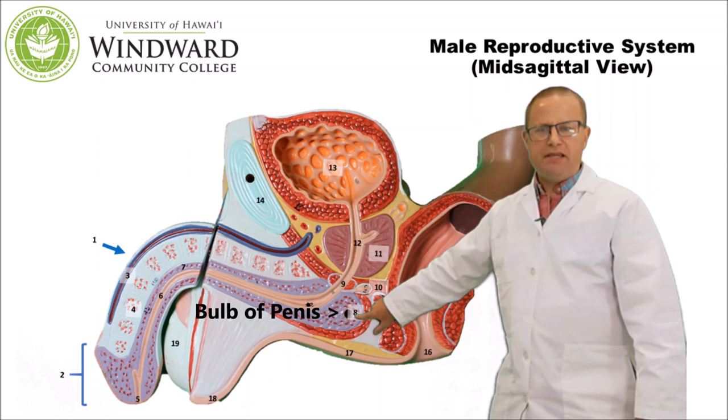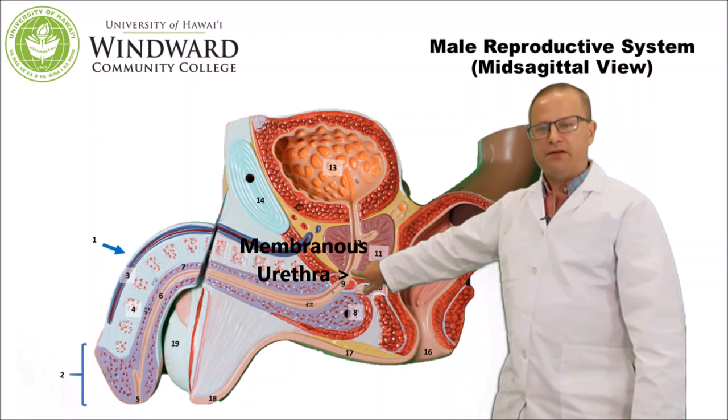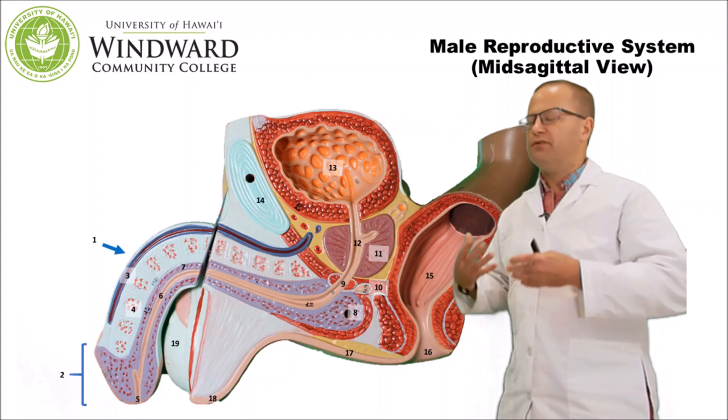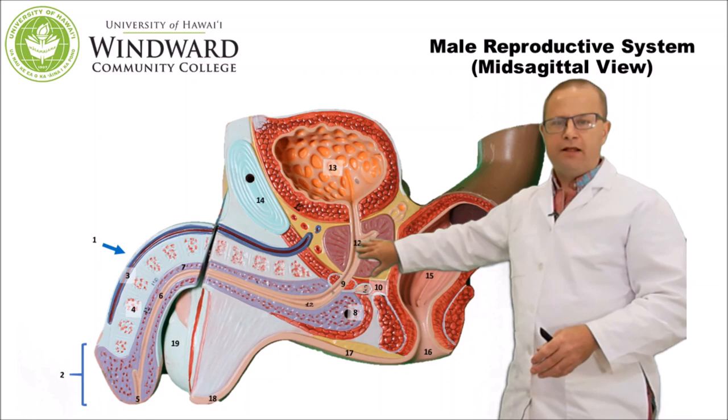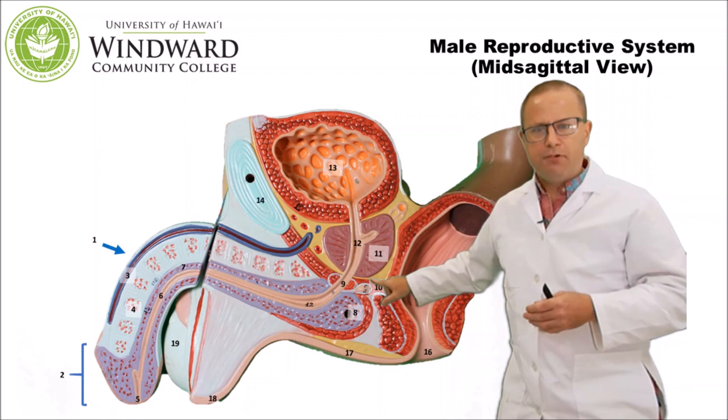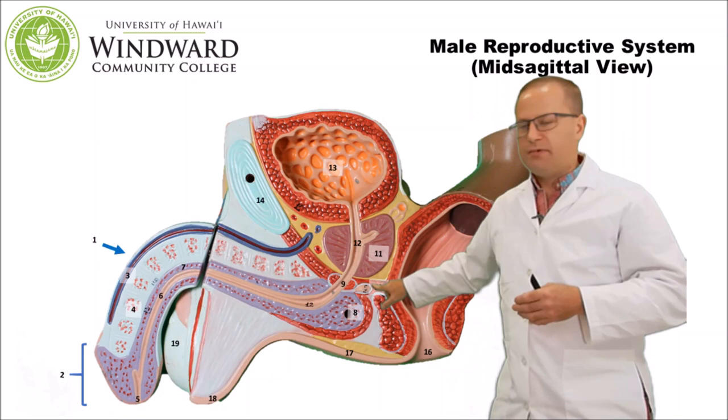Going further back, we have the bulb of the penis; then the spongy urethra passes through the body wall to become the membranous urethra, which travels into the prostate gland where it becomes the prostatic urethra. The prostate gland causes trouble for men as they get older because it enlarges and pinches off the prostatic urethra, making it hard to void urine from the urinary bladder. Somewhere in here is also the bulbourethral gland, important for producing some seminal fluid.